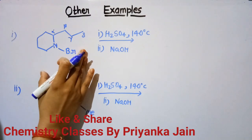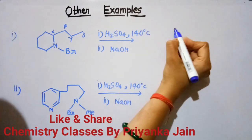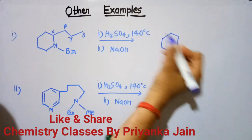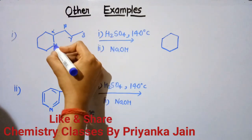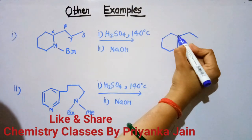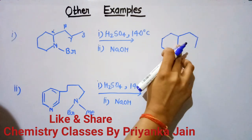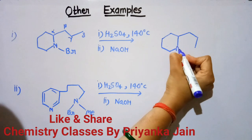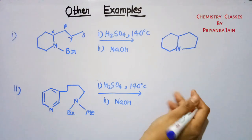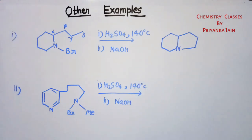As a result, a new bond is formed between the delta position and the nitrogen. Writing out alpha, beta, gamma, delta — the nitrogen forms a bond with the delta carbon, and we get this product — a pyrrolidine derivative.